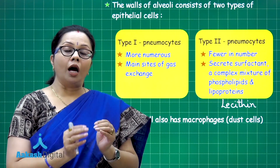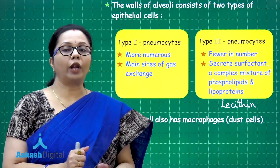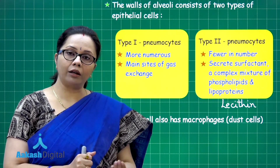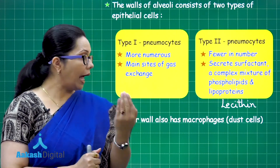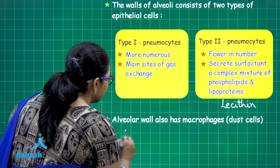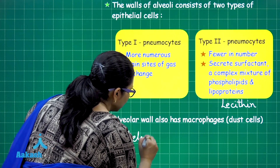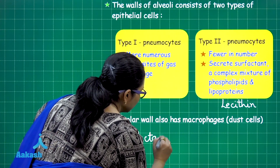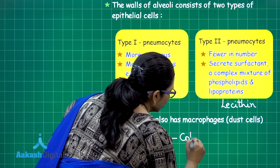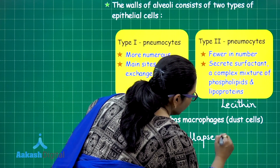If there is no surfactant, when we exhale air the alveoli would collapse. That collapse of alveoli is called atelectasis — this is the collapse of alveoli.